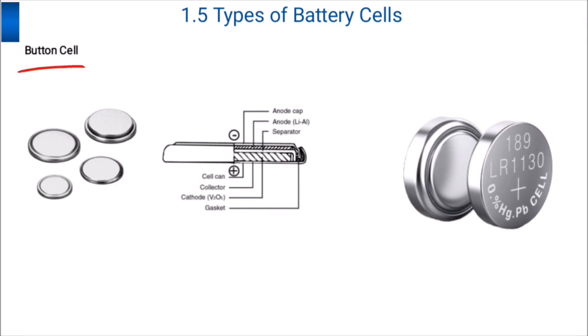The next topic is button cells. Here you can see a cross-section view of a button cell. In this picture, you will find positive and negative terminals. On the negative terminal side, you'll find the anode cap, anode lithium ion, and then the separator present in between. On the positive side, you will find the cell can, collector, cathode, and gasket. These are all the main components.